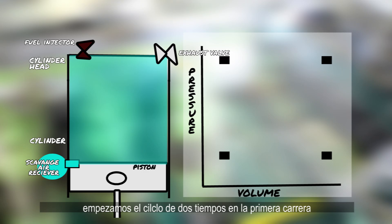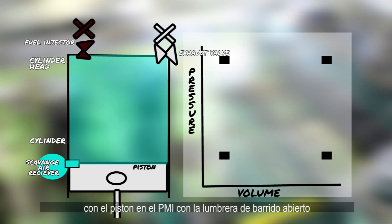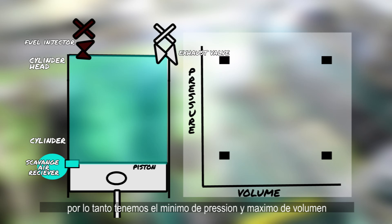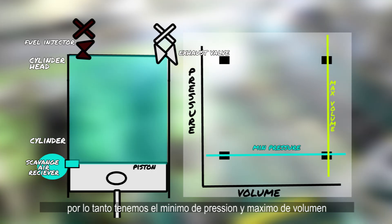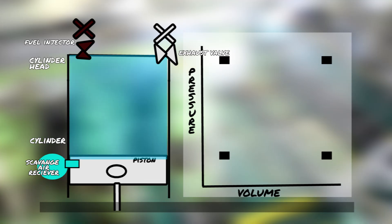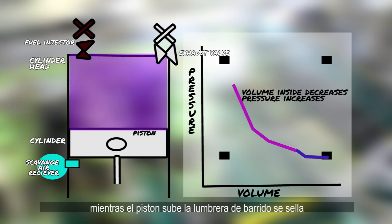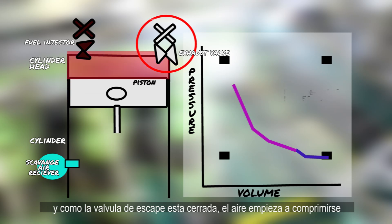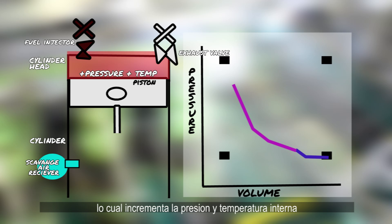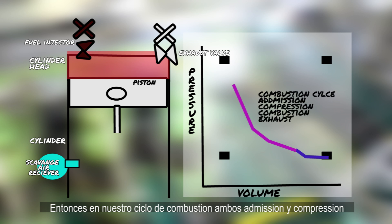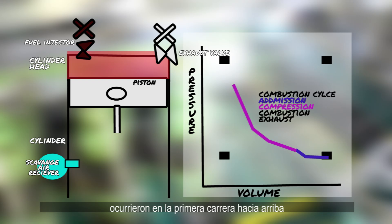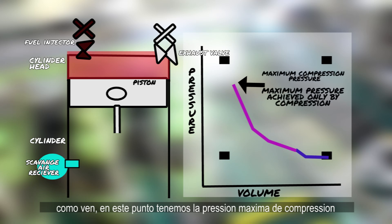So let's begin our two-stroke cycle on the first stroke, with the piston at bottom dead center and the scavenge port uncovered, allowing scavenge charge air inside the cylinder. At this point, we have the minimum amount of pressure and the maximum amount of volume — the intersection of these two lines. As the piston goes up, the scavenge air port is sealed, and due to the exhaust valve being closed, the air starts to compress, thus increasing the internal pressure and temperature. So in our combustion cycle, both admission and compression happen in our first upward stroke. At this point, we have maximum compression pressure.